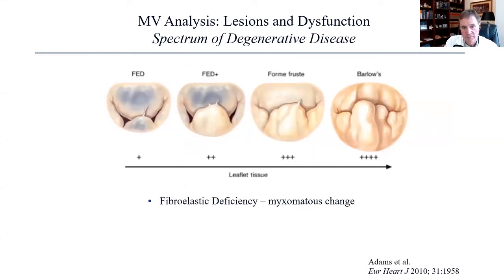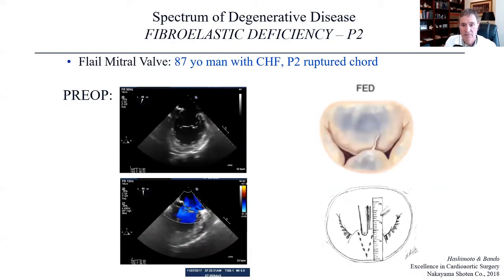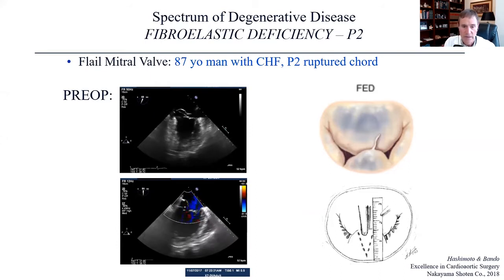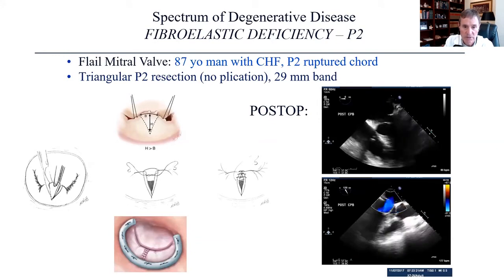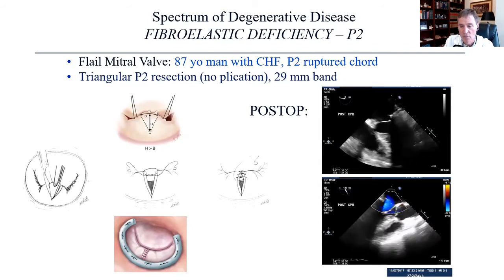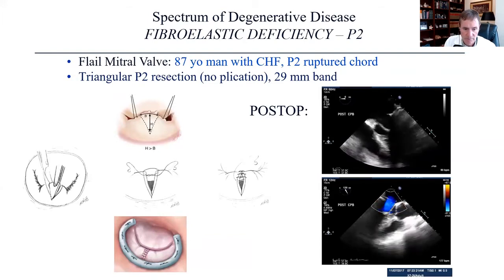The spectrum of degenerative disease goes from fibroelastic deficiency to fibroelastic deficiency plus, to forme fruste, to full-blown Barlow's, which involves both leaflets. Here's a flail mitral valve in an 87-year-old gentleman with a P2 ruptured cord where the cord ruptured but the leaflet itself was not enlarged. We did a triangular resection of the flail segment, reconstructed the leaflet, and supported it with a ring. We always support with a ring to improve coaptation because there is always some annular dilatation with prolonged regurgitation. The post-op result was good.